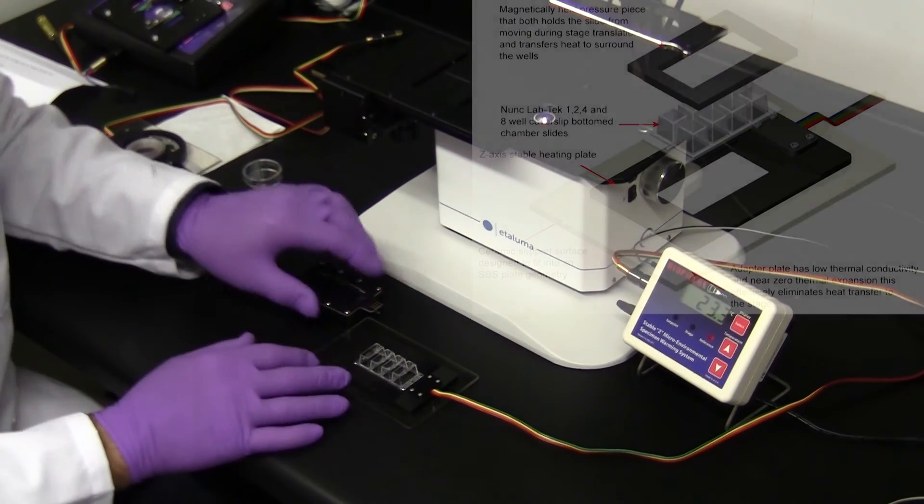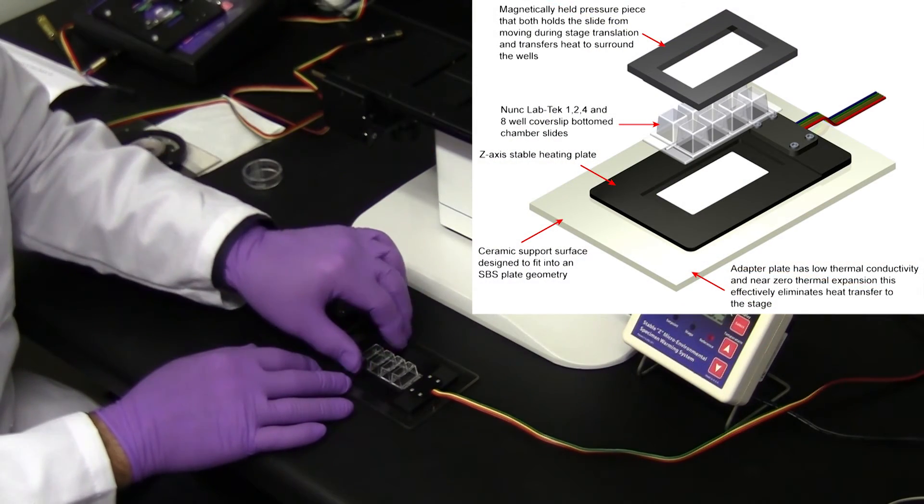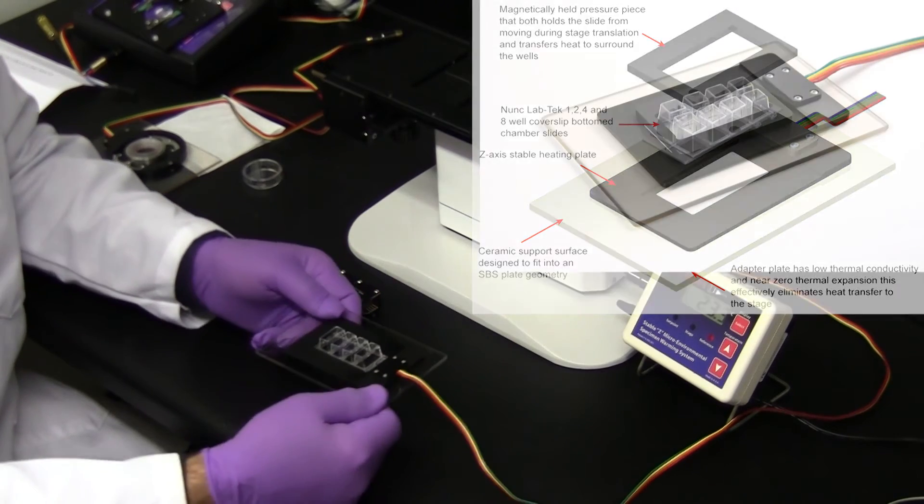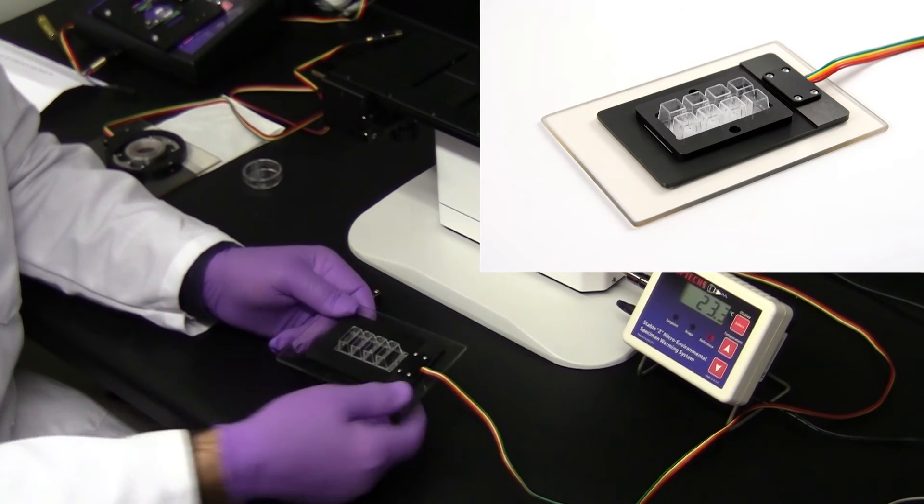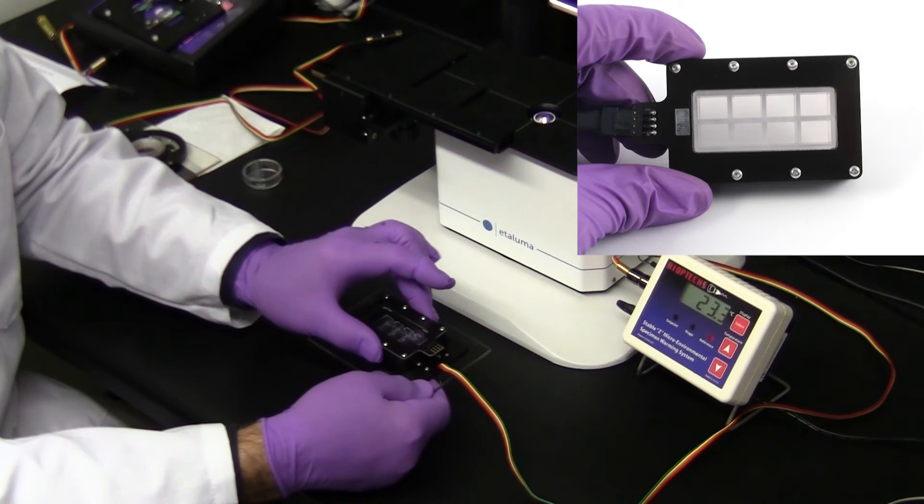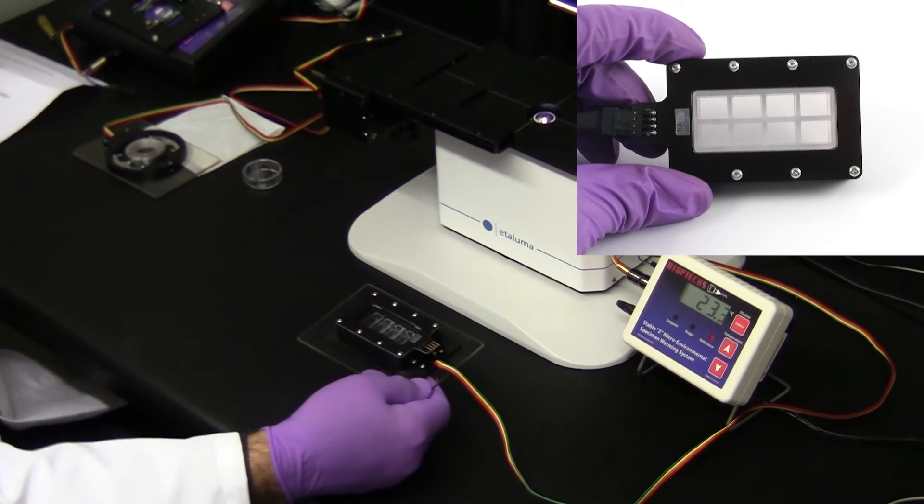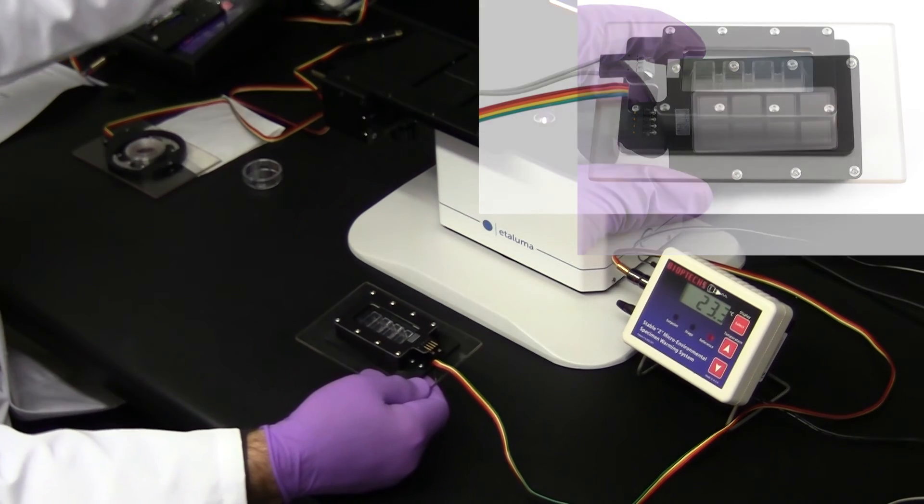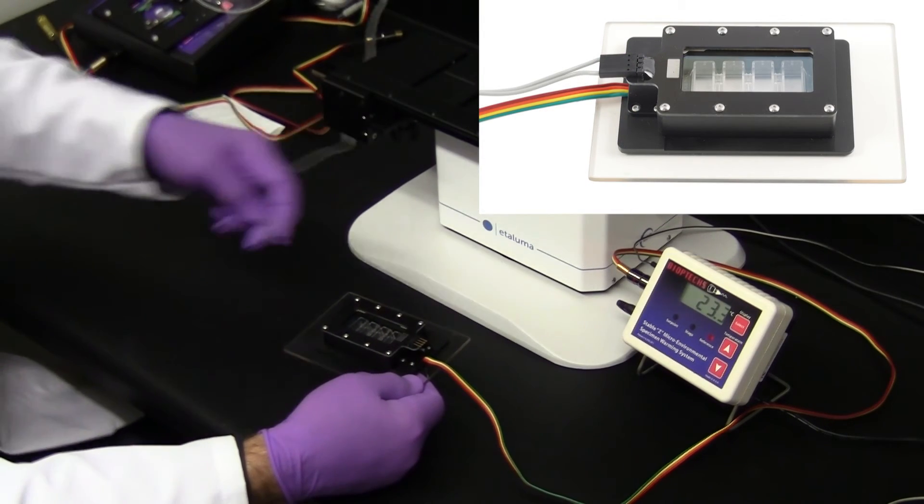This is an adapter for Nunc Lab-Tec chamber slides. It also provides Z-axis stability and is powered by a stable-Z controller. It uses the same Z-axis stable design characteristics as the 35mm dish model. There is an optional heated lid that can be used with the humidification system.